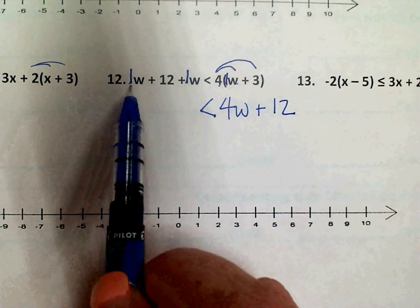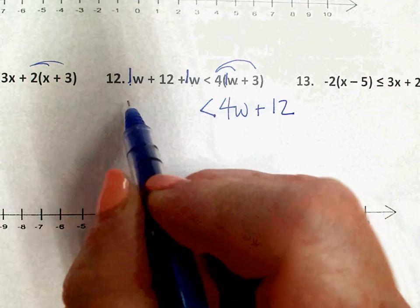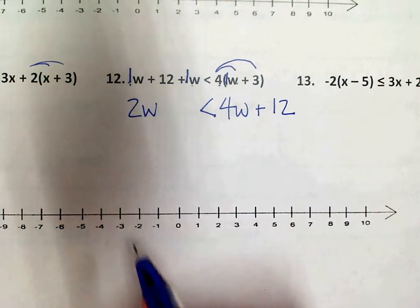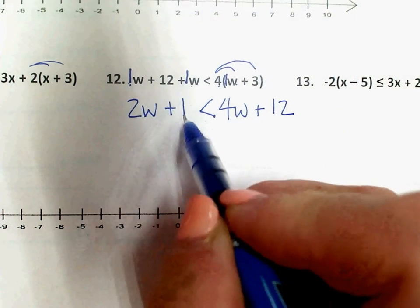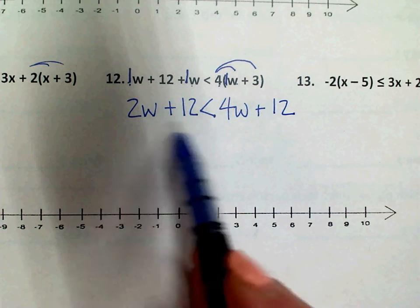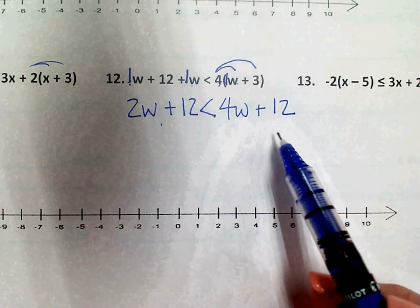On this side, this 1W and this 1W, that's really 2W, so I'll go ahead and combine those. And I have a plus 12. So I've combined my like terms here, and I don't have any like terms here.